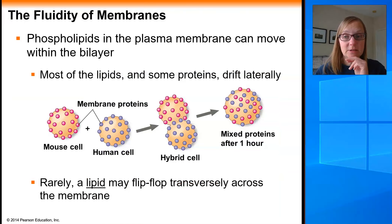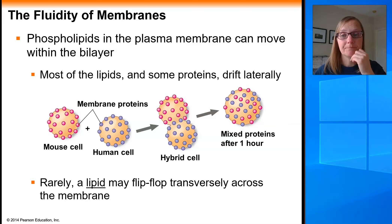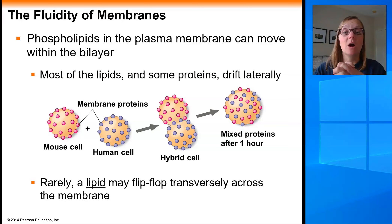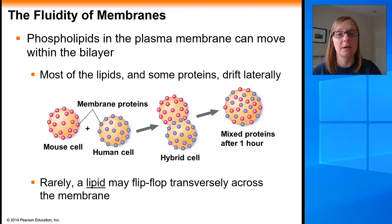The next step is to talk about the fluidity of a membrane — why it's important that the membrane is fluid, and what determines how fluid a membrane will be. Scientists have learned that phospholipids in the plasma membrane can move within the bilayer laterally. Proteins can also drift laterally throughout the membrane, and we know this because experiments have been done to study it.